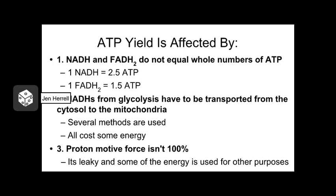How many ATP molecules are made through this long metabolic process? Most estimates say that from the energy in one glucose molecule we can make between 36 and 38 ATPs — but that's if conditions are ideal. There are some factors that can decrease that amount. First, the exchange rate between energy carrier molecules and ATPs is not in whole numbers: there's enough energy in an NADH to make about two and a half ATPs, and in FADH2 to make about one and a half ATPs. There's no such thing as a half ATP, so it's an estimated value.